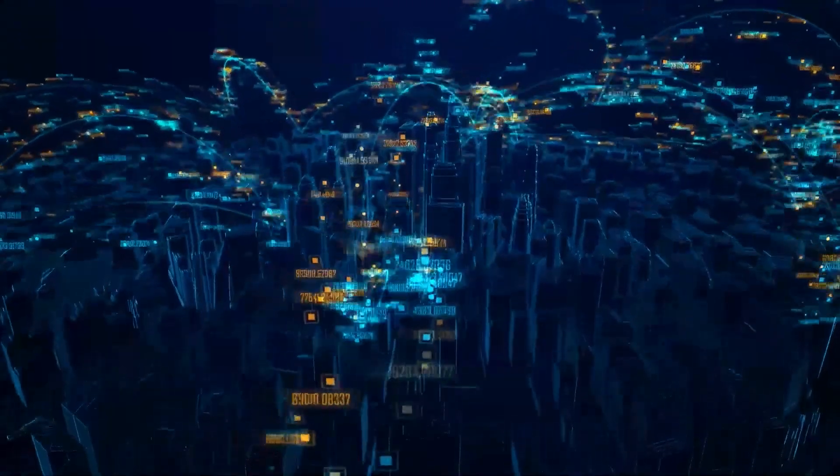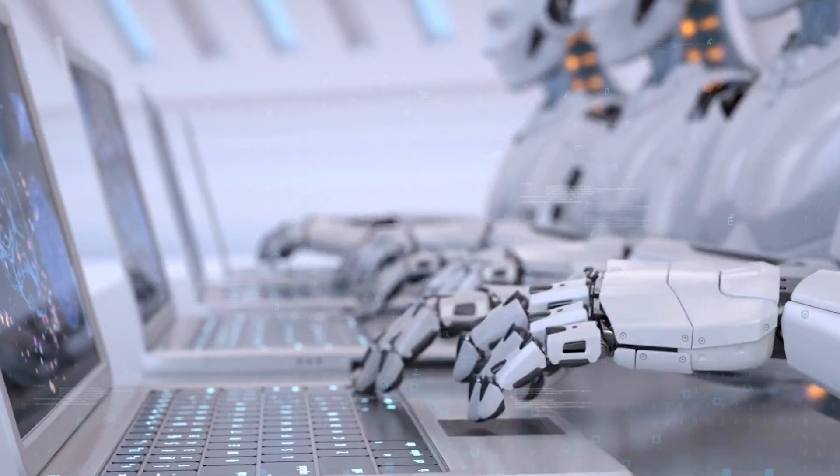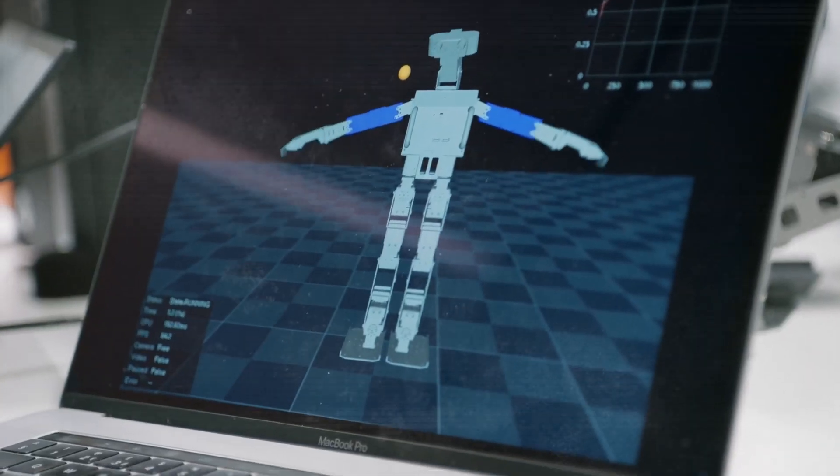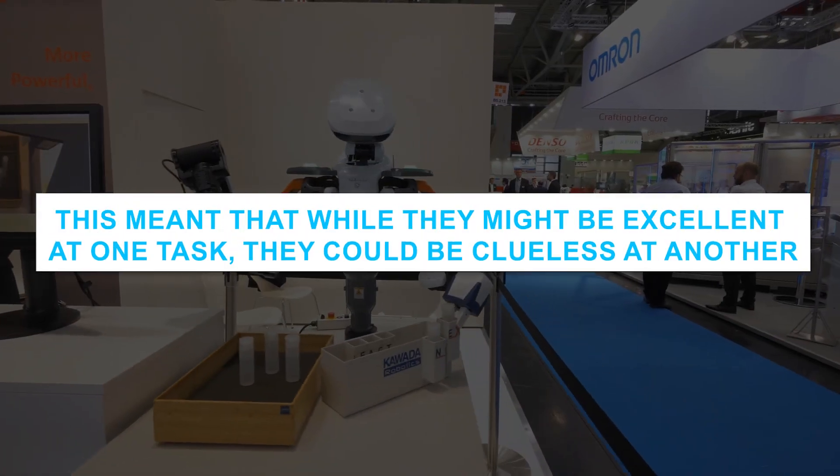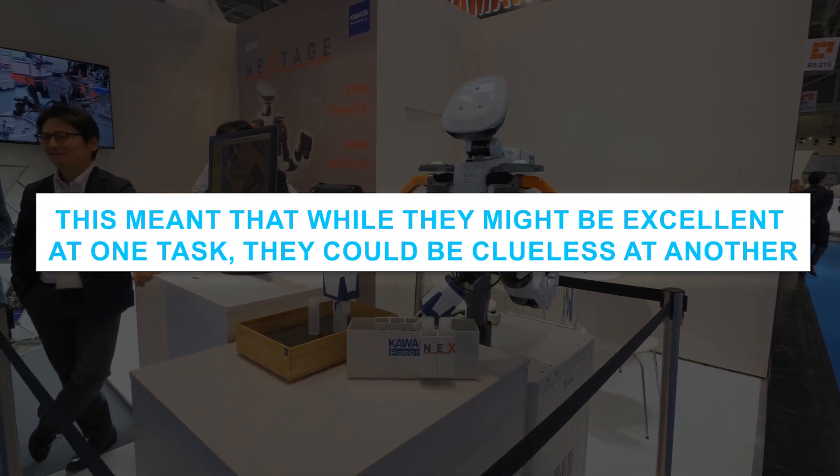Why is this important? Robots, just like us, learn from experiences. But traditionally, they could only learn from a limited set of experiences. This meant that while they might be excellent at one task, they could be clueless at another.